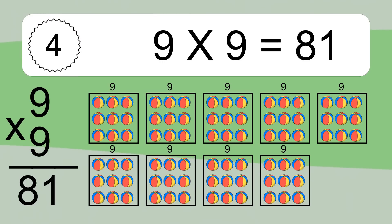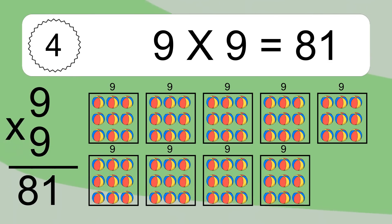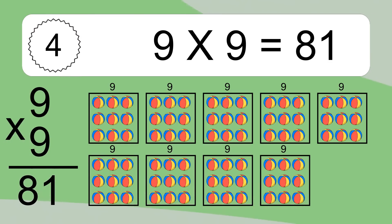We have 9 boxes and each box has 9 colorful balls inside. If you count all the balls in all the boxes together, you will have 9 times 9 balls. This equals 81 balls.